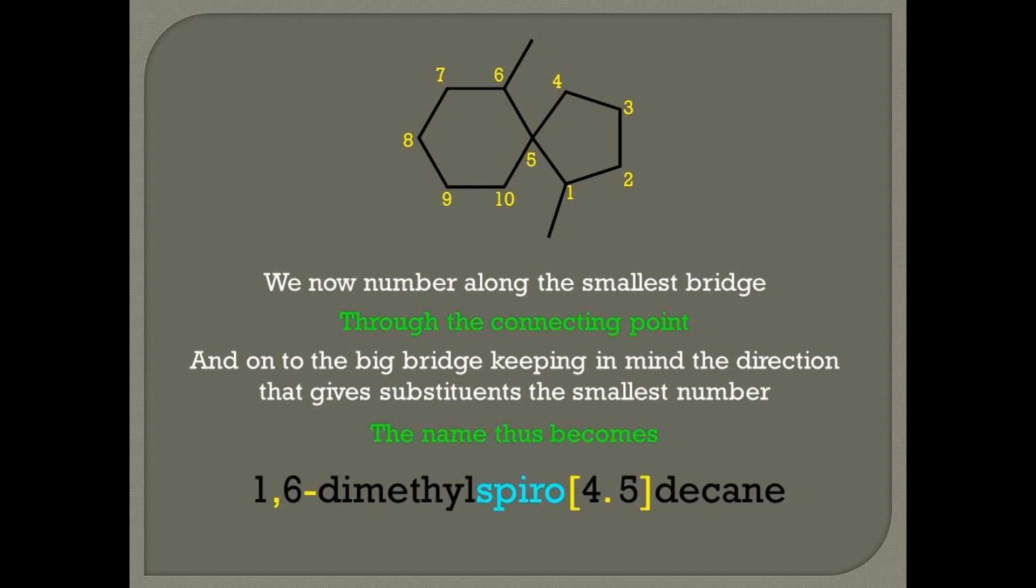And therefore, this molecule will be called 1,6-dimethyl spiro, open square bracket, 4.5 decane.